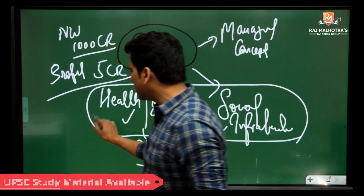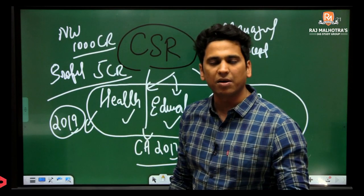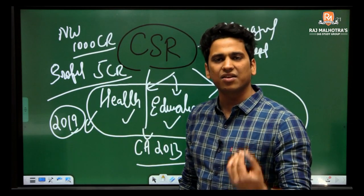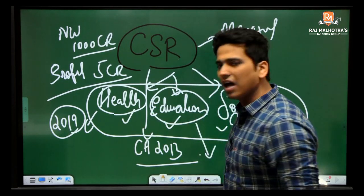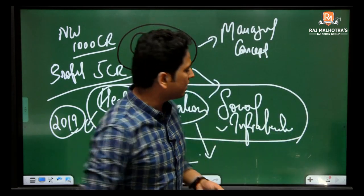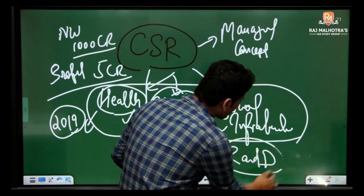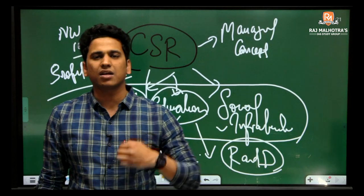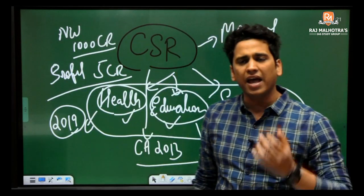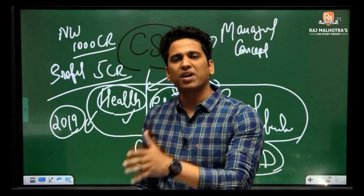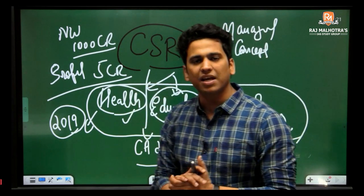In 2019, India made a slight amendment to CSR norms. It was added that as part of fulfilling the 2% CSR responsibility, companies would also need to invest in R&D. Since India's investment in R&D has not been very high, this is one way the government is encouraging companies to invest in research and development through the CSR framework.